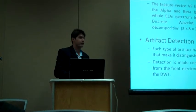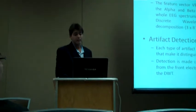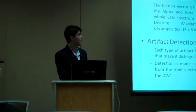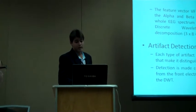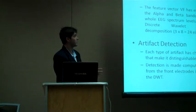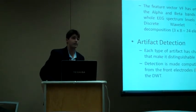The feature vector is then composed by the energies of the alpha and beta bands, and also the whole EEG spectrum levels from the discrete wavelength transform decomposition. So we have three measures of energies for each one of the eight electrodes that results in a 24-element vector.